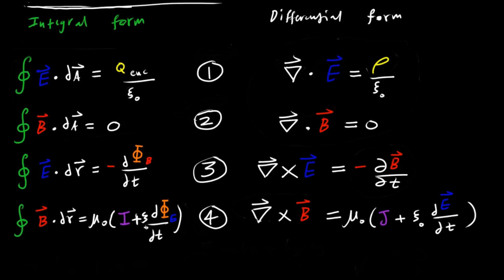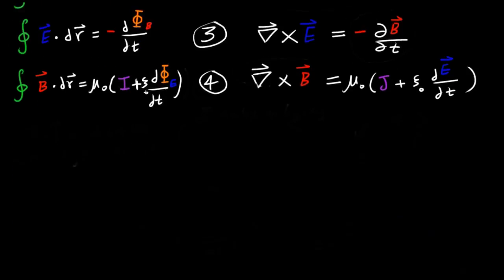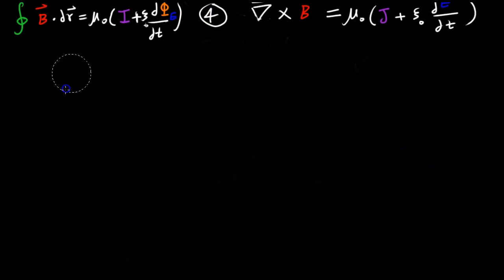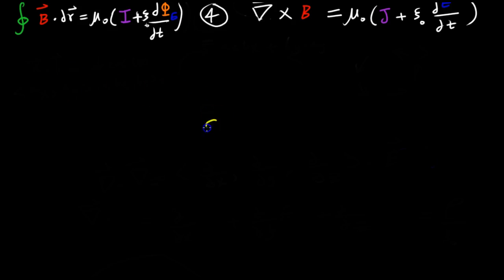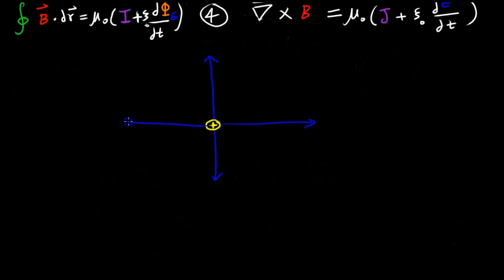Looking at the first law, which is Gauss's law, let's first review some basics about electric charges. If you have a positive charge just sitting here, it's going to have a property called charge — it has a mass and a charge. It's going to produce an electric field going in every direction, which is a vector quantity.